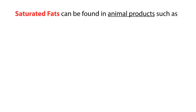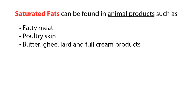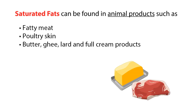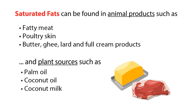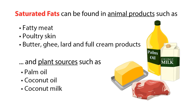Saturated fats can be found in animal products such as fatty meat, poultry skin, butter, ghee, lard and full cream products, and plant sources such as palm oil, coconut oil and coconut milk.